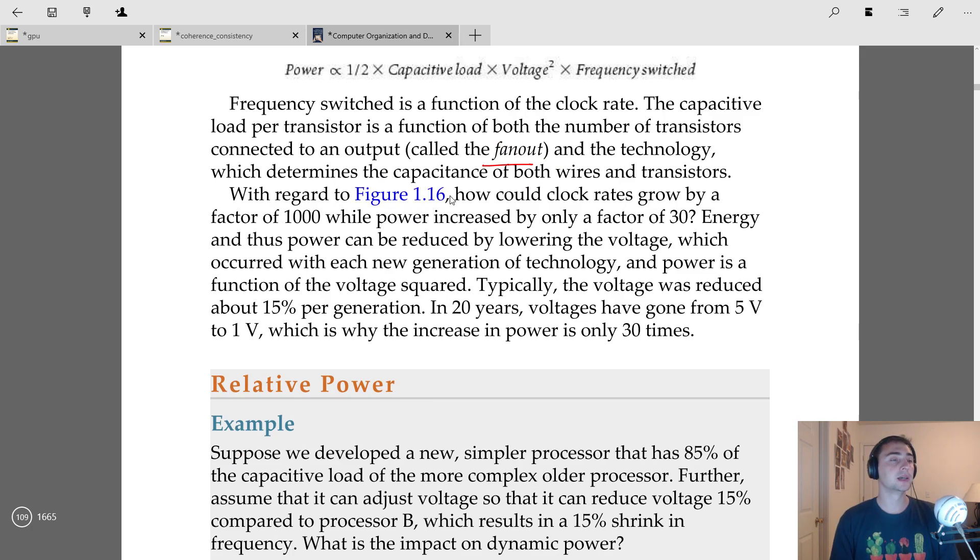This comes back to the fact that we're able to lower the voltage at the same time. Even though clock rate grew by a factor of a thousand and power increased by only a factor of 30, we can just lower the voltage. This is what we could do for quite a while until relatively recently. This was a common technique for new generations of technology. Voltage would be reduced by 15 percent per generation, and so this led to, in about 20 years, going from about 5 volts to being around 1 volt. This is why power only increased 30 times, because this voltage squared term we are able to keep making smaller and smaller. And then we are able to increase the frequency by a huge amount.